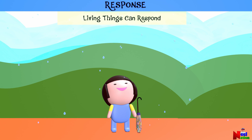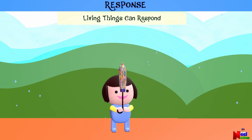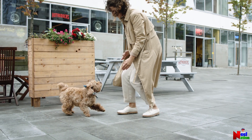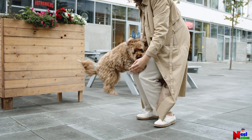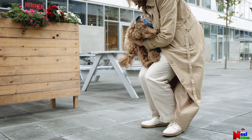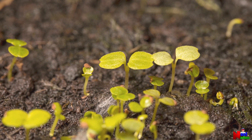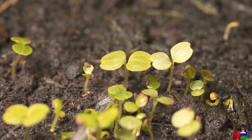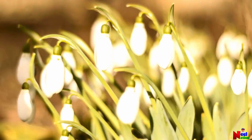Response! Living things respond to the world around them. Living things can do cool things when something around them changes — this is called responding. If you see a cute puppy and you go near it, it might wag its tail because it's happy to see you; the puppy is responding to your presence. Plants also respond to their environment in various ways — plants can turn or bend towards light, and some plants flower in response to changes in day length.